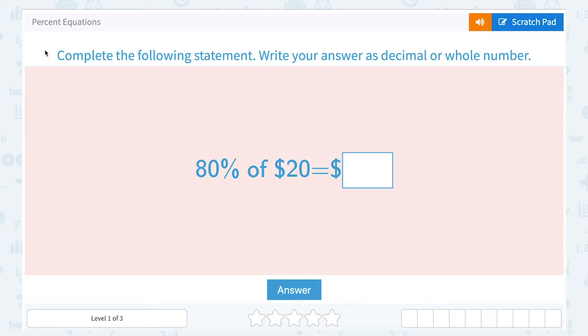Let's take a look at percent equations. Complete the following statement, write your answer as a decimal or whole number. 80% of $20 equals blank dollars.